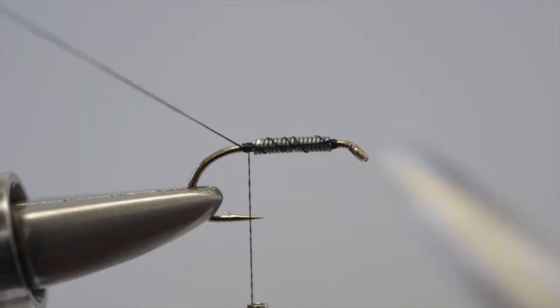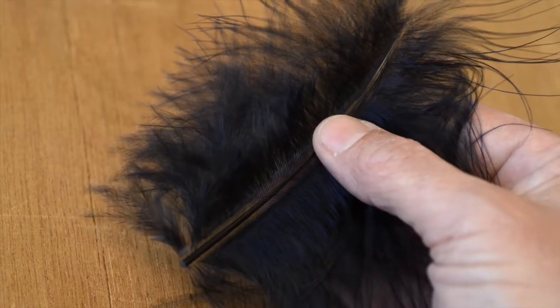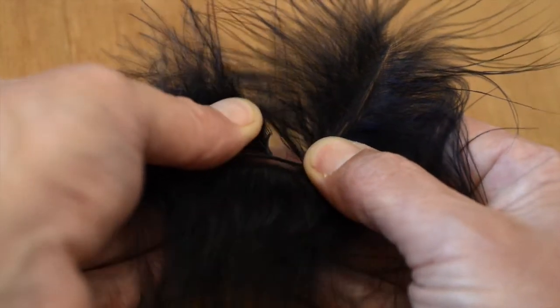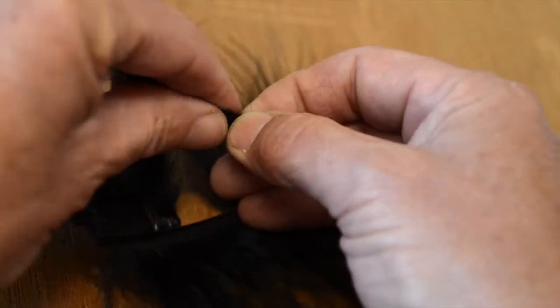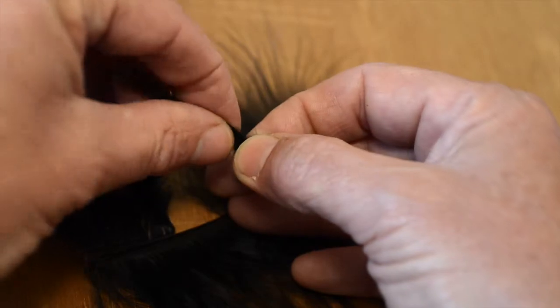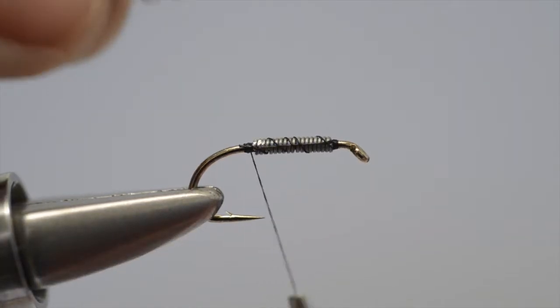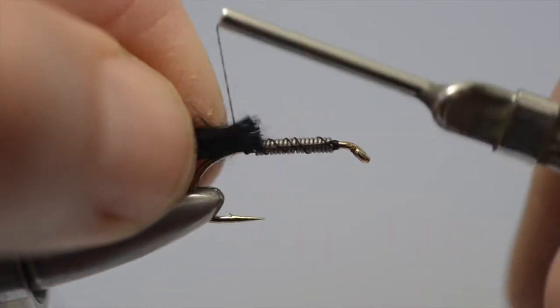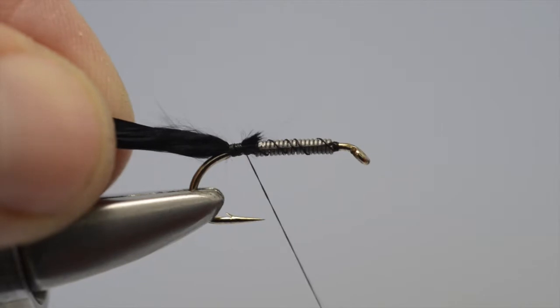As you can see we're leaving a little gap, and this is to accommodate the tail, which will be a pinch of black marabou. So we take our slim pinch of black marabou, trim off the ends, and catch it in, in that little section at the bend, with close turns of thread.